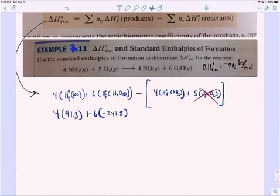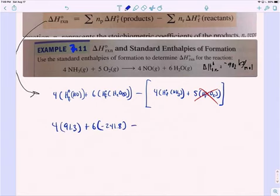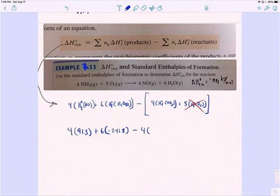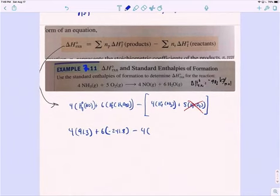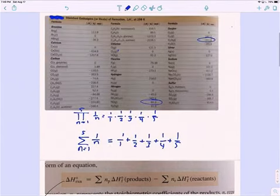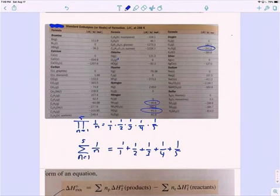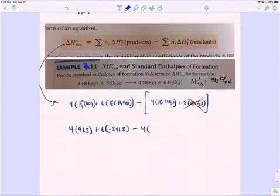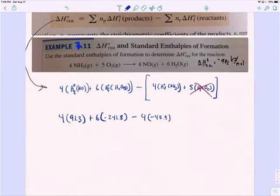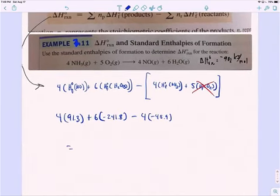I need a little more space here. Minus four times the heat of formation of ammonia. Heat of formation of ammonia is minus 45.9, like that. Then we plug that into our calculators.